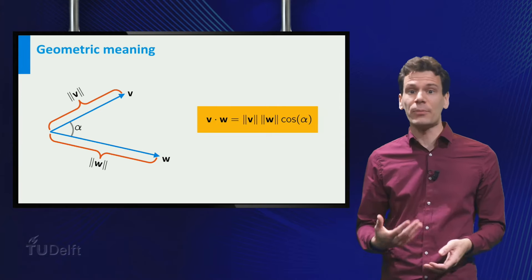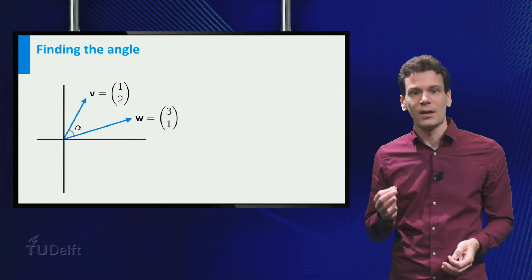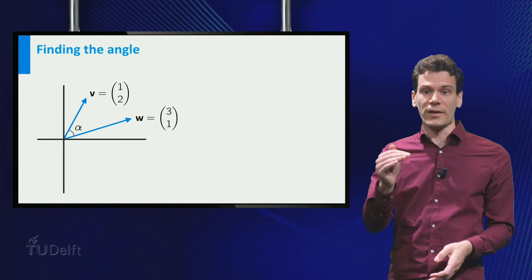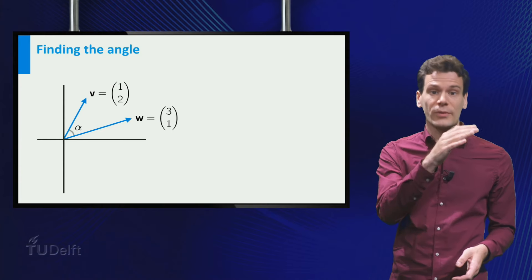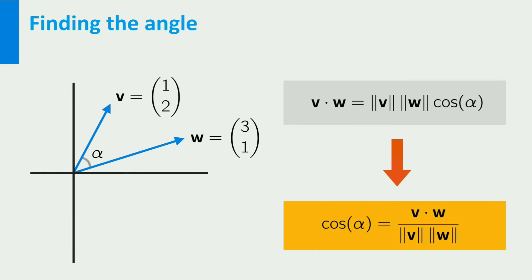Let me give you an example of how this property can be used to easily find angles between vectors. Consider the vectors v=(1,2) and w=(3,1). To find the angle, we can use the relation we just saw. We can rewrite this formula as follows: the cosine of alpha equals the dot product of v and w divided by the norm of v times the norm of w.